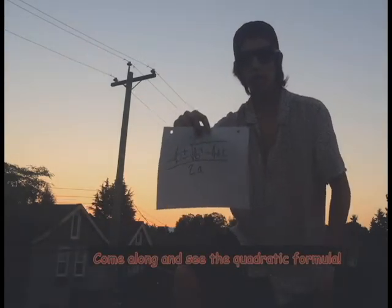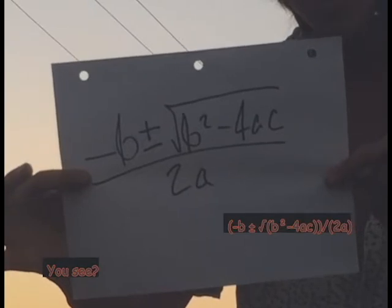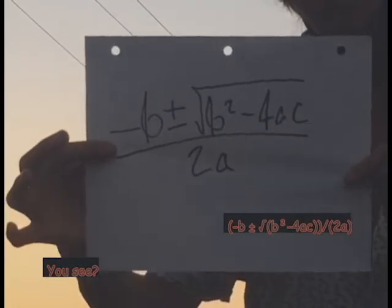Come along and see the quadratic formula. Minus B, plus or minus root B, square minus 4AC over 2A.